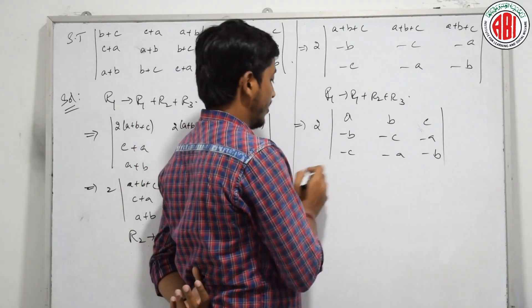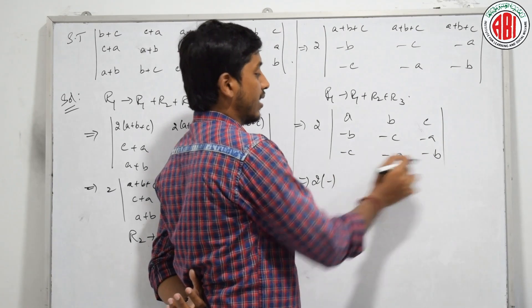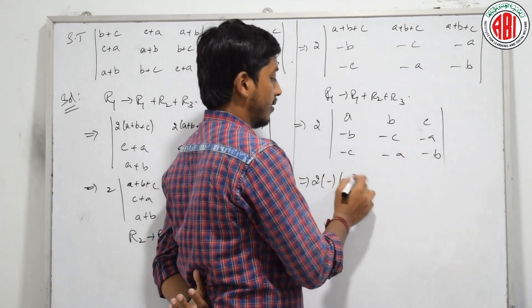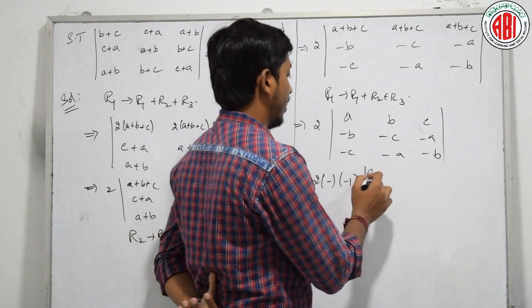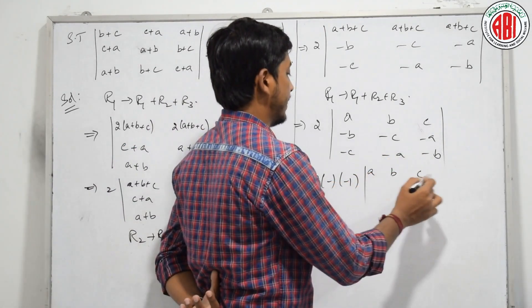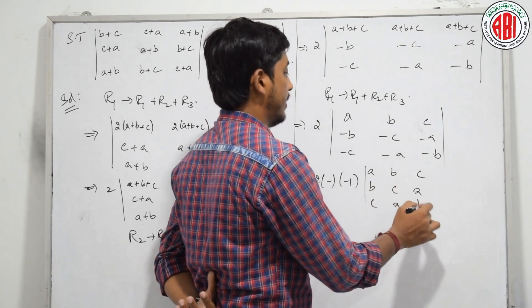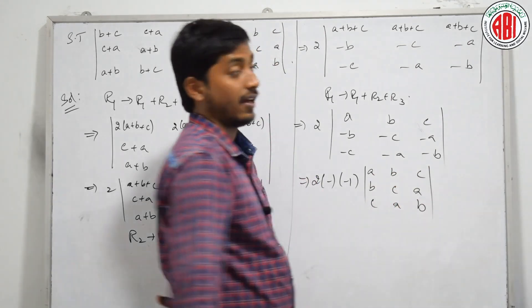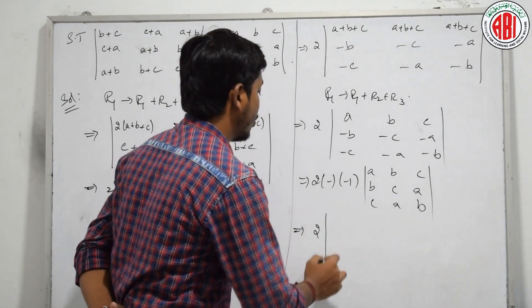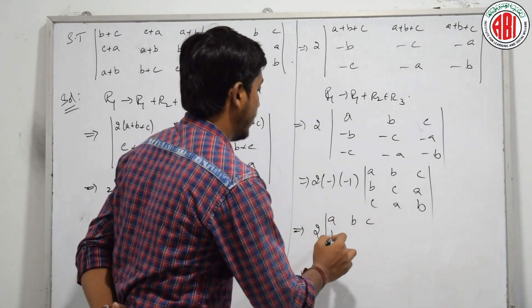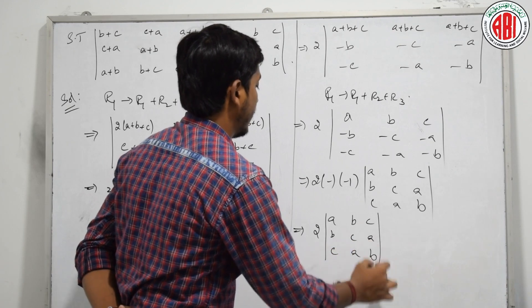Taking minus common from row 2 and minus common from row 3, I will be left with A, B, C; B, C, A; C, A, B. Therefore, my answer will be 2 into the determinant of A, B, C; B, C, A; C, A, B — which is exactly what was asked.